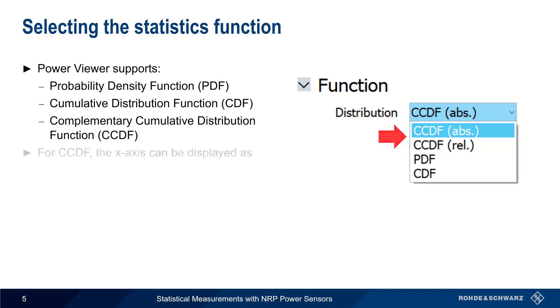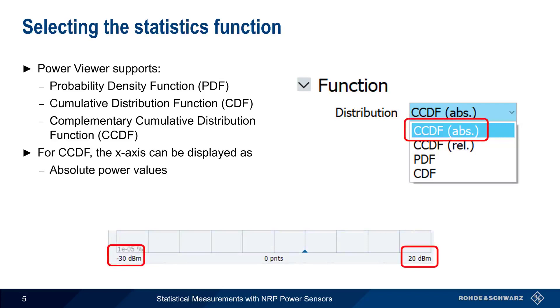In the case of CCDF, we can choose whether our x-axis will display absolute power values, such as minus 30 dBm to plus 20 dBm, or relative power values, where 0 dB is the average signal power, and all other values are given in dB above the average power level.